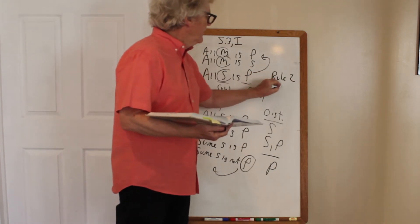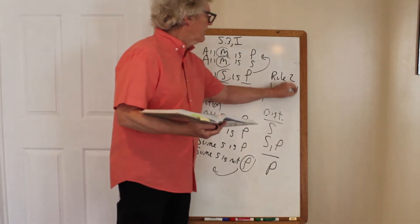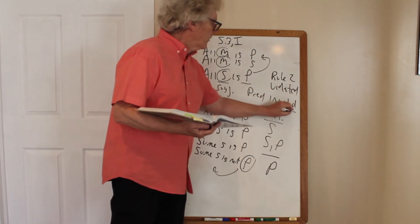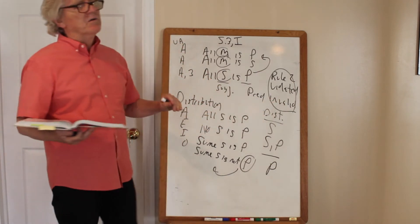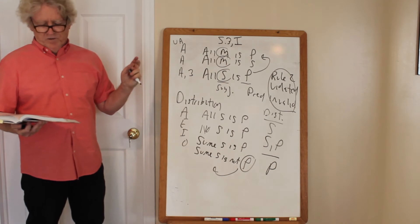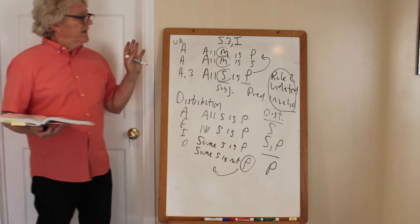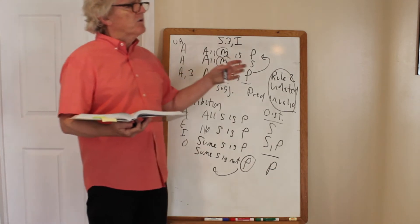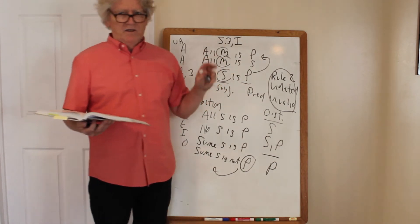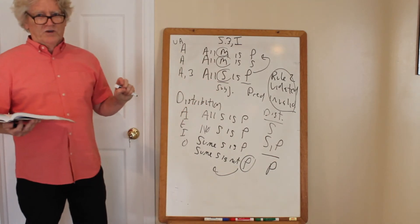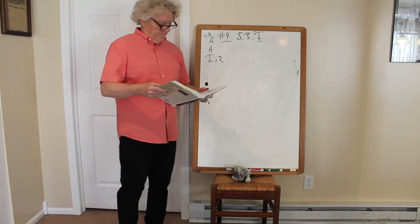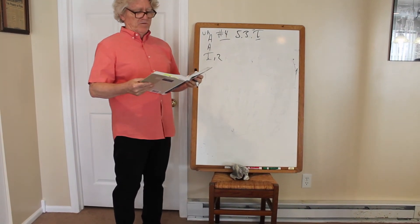Rule two is violated. So what can we say about this syllogism? AAA-3 must be invalid — always will be — because it violates rule two. The idea behind rules, as opposed to Venn diagrams, is that if one or more of the five rules is violated, you have an invalid argument. If no rule is violated, you have a valid argument.